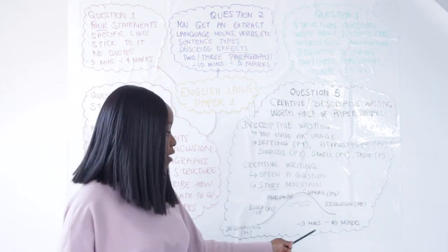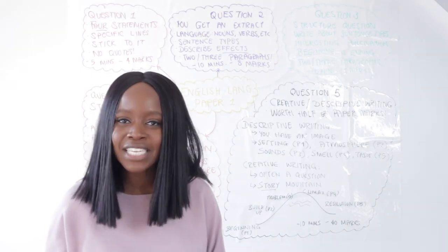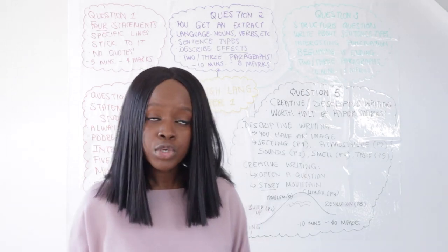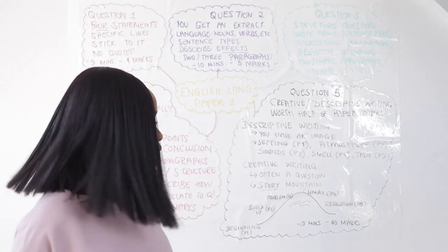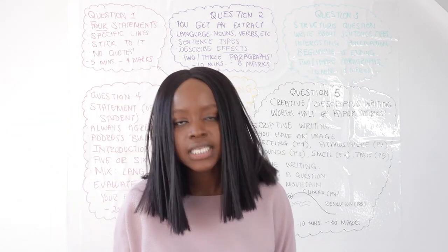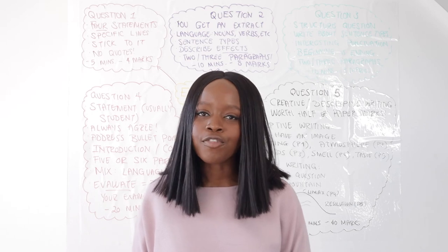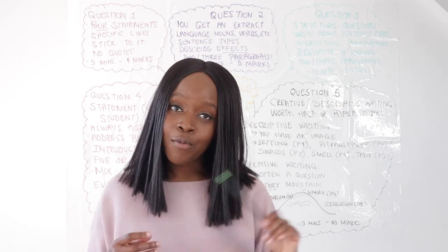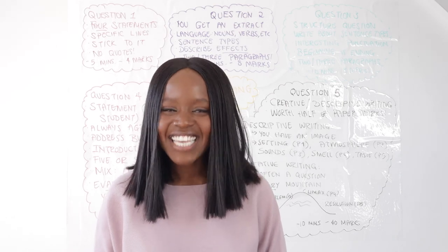Question five is worth 40 marks. You should spend 45 minutes on questions one to four, then for question five spend 10 minutes planning and 50 minutes writing. That's it for understanding the layout of English Language Paper 1. I hope you found it really useful — check the following video where I'll go over the exam question practice. Thank you so much for listening.